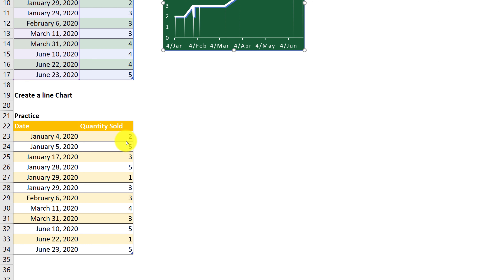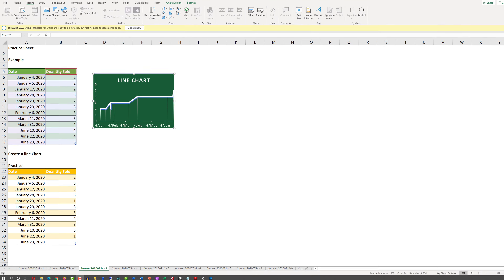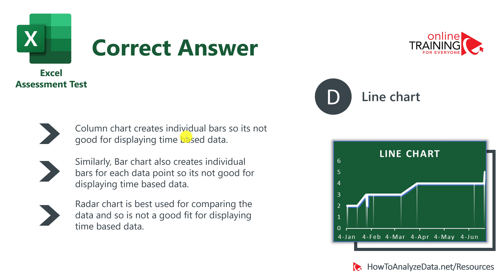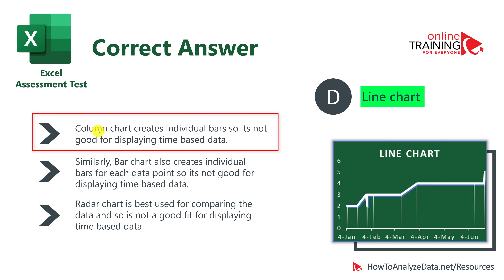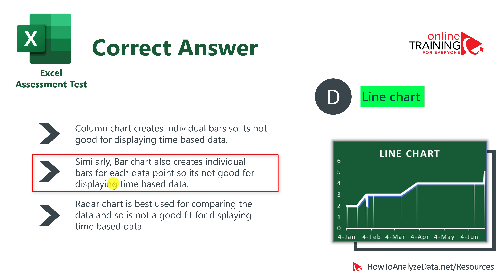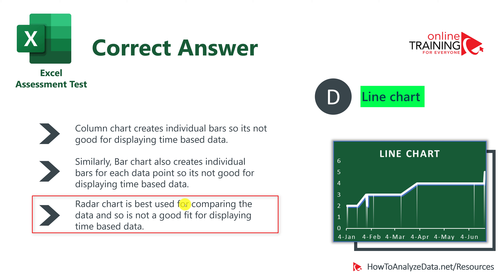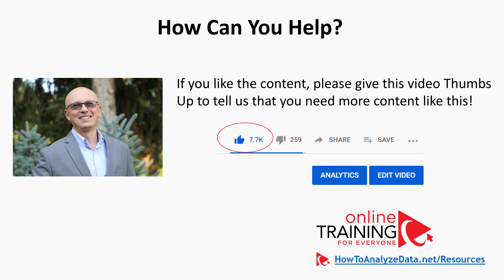Going back to the slide, the correct answer is D — the line chart. Column charts and bar charts create individual bars for each data point and are not ideal for time-based trends. Radar charts are best for comparing data across dimensions and are also not appropriate here. The line chart is definitively the best choice for displaying time-based data. If you like the content, please give this video a thumbs up. Now let's continue and get you ready for the test.